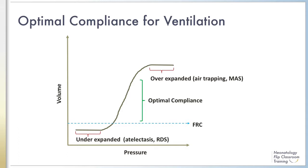When the lung is poorly recruited, as in atelectasis with low lung volumes, or when the lung is overexpanded, as in air trapping or meconium aspiration syndrome, suboptimal compliance results as represented by the horizontal portion of the compliance curve.